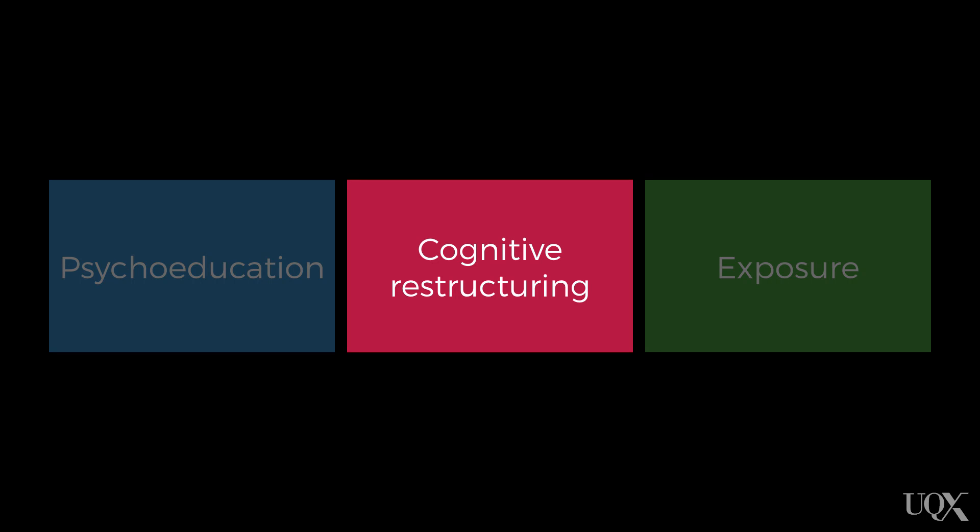Cognitive restructuring requires that the client understand the importance of thoughts. Once this has been explained — typically using the ABC model, which is an example of psychoeducation — we would be asking the client to start identifying the unhelpful thoughts that are making them anxious. The most common way of doing this is by having clients complete a weekly thought diary.